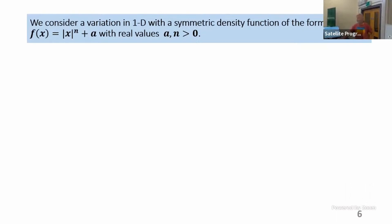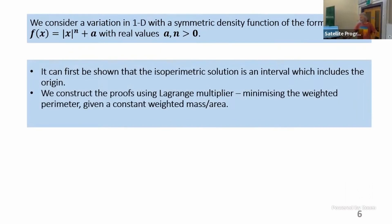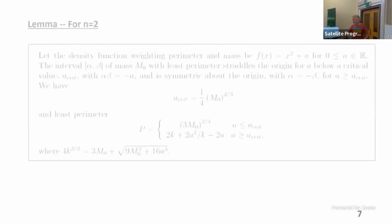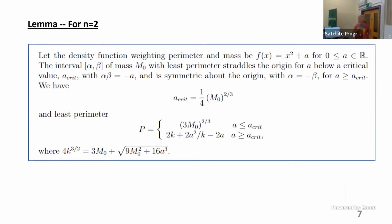If we take a symmetric density function |x|^n + a, with real values a and n both greater than zero, first of all I can show that the solution is going to be a single connected interval that includes the origin. I'm going to work with the Lagrange multiplier method, minimizing the perimeter given the constant weighted mass or area. The first result, when we look at n = 2, is the only value of n for which I can get a complete solution — I can do all the maths and get a nice result.